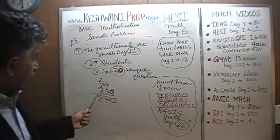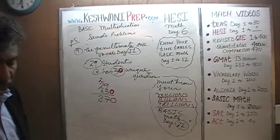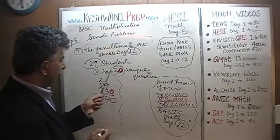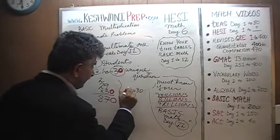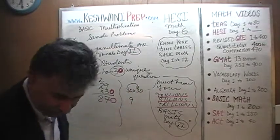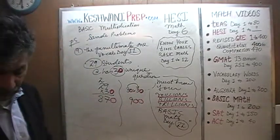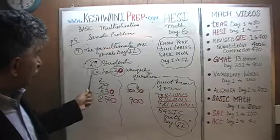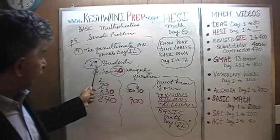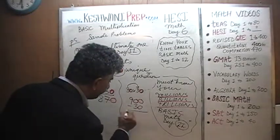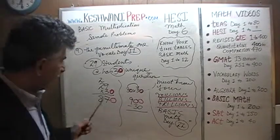870. Here is an even quicker way: do 30 times 30 — that is just 3 times 3 equals 9, then stick two zeros, giving 900. But we need 29 thirties, not 30 thirties. So just subtract one 30 from 900, and you end up with 870.